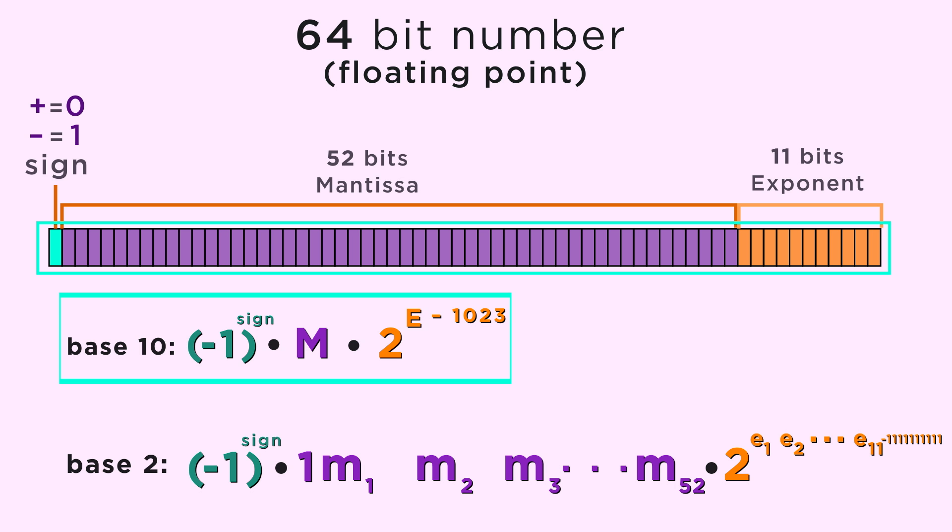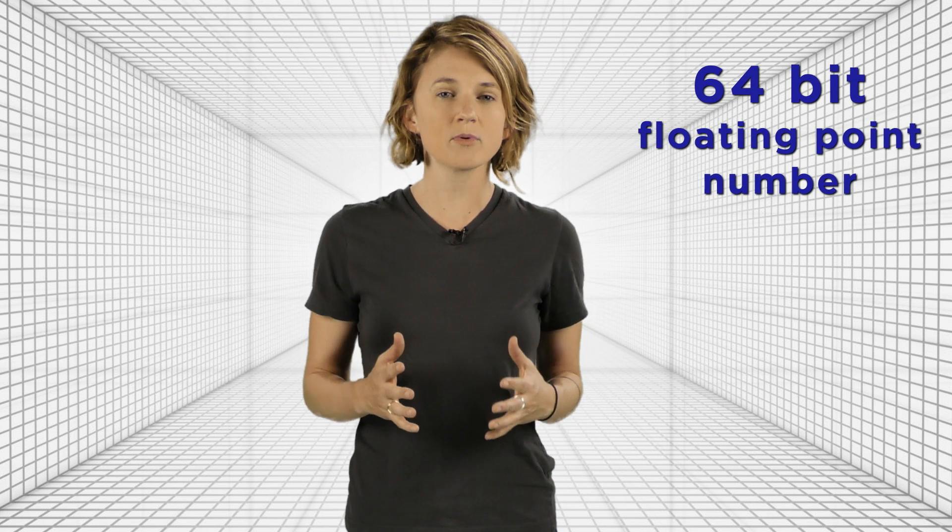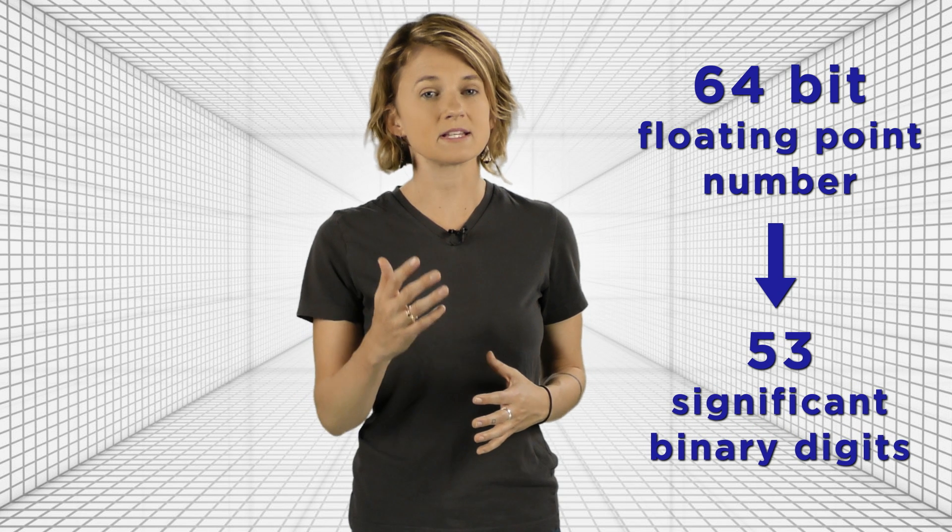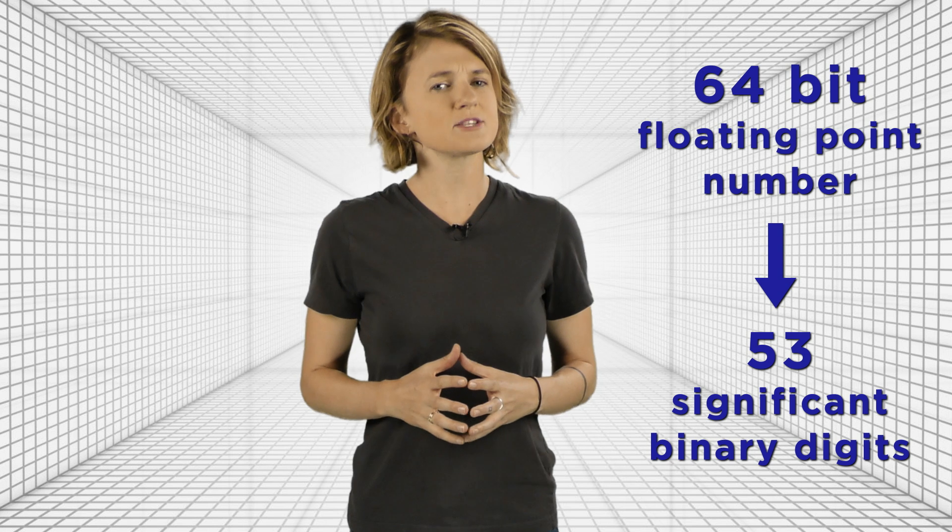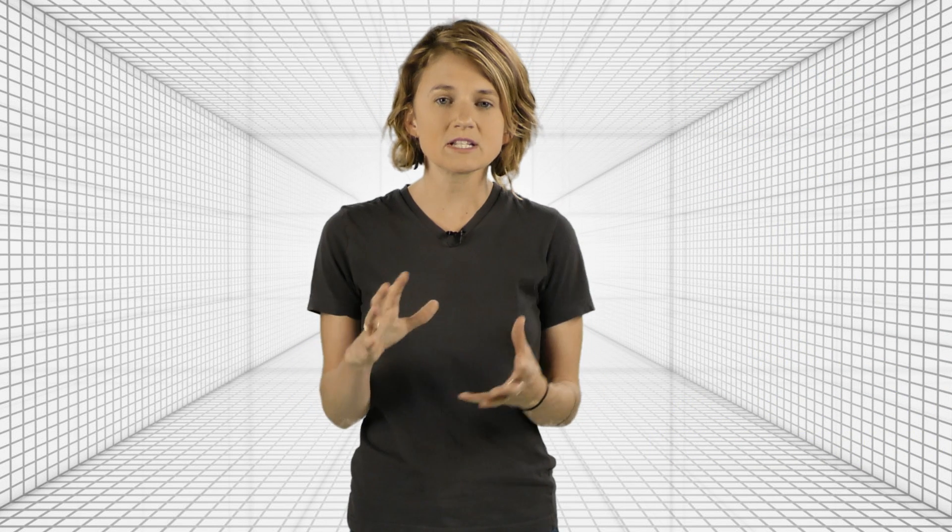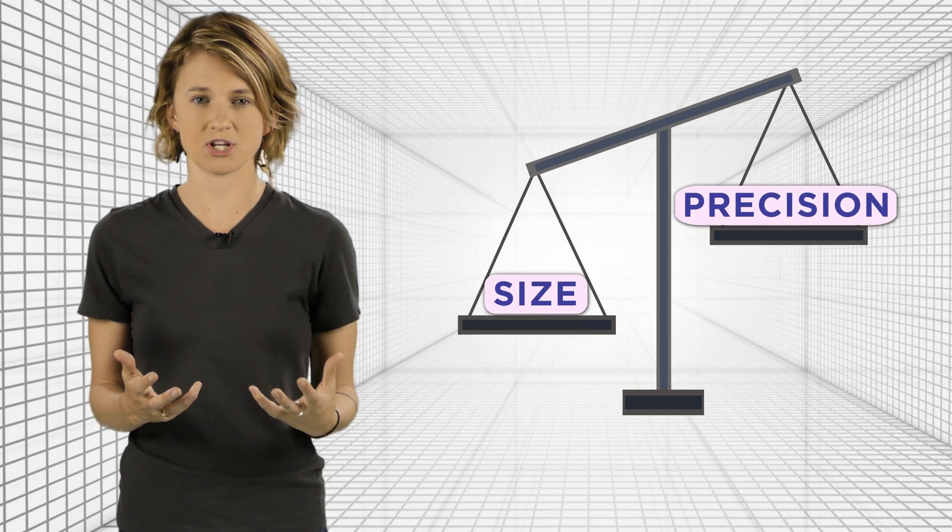This peculiar way of representing numbers means that any 64-bit floating point number has 53 significant binary digits. Those are all the digits in the mantissa. The exponent part just tells you where to put the decimal place. Restricting the number of significant digits and then separately deciding where to place the decimal results in a trade-off between size and precision.